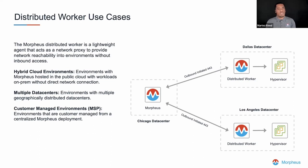This is particularly valuable in that it eliminates the need for a VPN connection specifically for Morpheus to facilitate that interaction. Certainly there may be a VPN for various other reasons, but leveraging the distributed worker, that no longer becomes necessary for that specific use case. Multiple data centers may also desire to leverage the distributed worker to facilitate communication in a distributed fashion, as well as managed service providers integrating with customer environments without requiring a VPN connection.